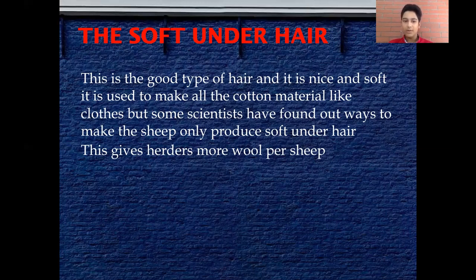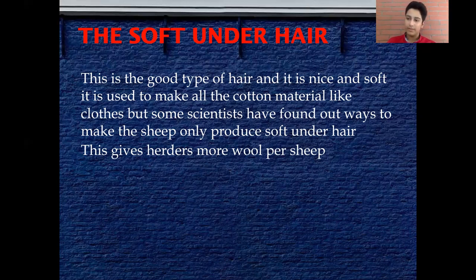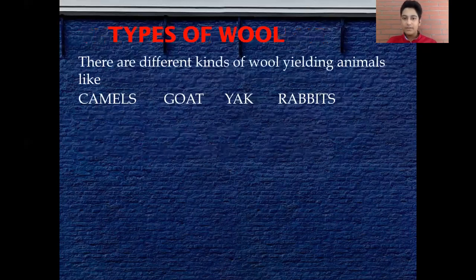Scientists have found ways to make sheep produce only the soft under hair. This gives the people who are rearing sheep more wool per sheep. Because they are herders they do not get paid very much, so they actually need this improvement really badly.